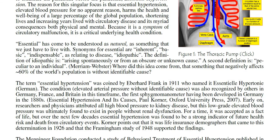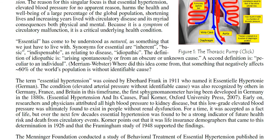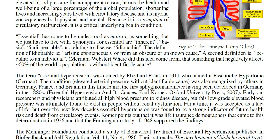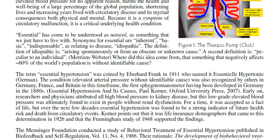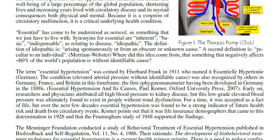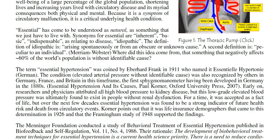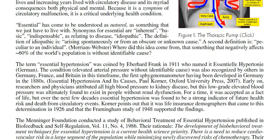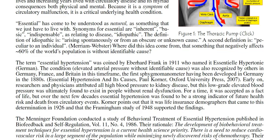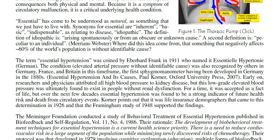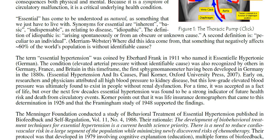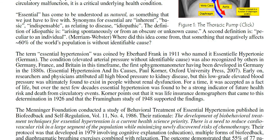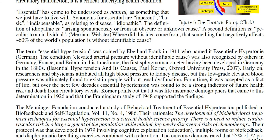Early on, researchers and physicians attributed all high blood pressure to kidney disease. But this low-grade elevated blood pressure was ultimately found to exist in people without renal dysfunction. For a time it was accepted as a fact of life, but over the next few decades, Essential Hypertension was found to be a strong indicator of future health risk and death from circulatory events. Korner points out that it was life insurance demographers that came to this determination in 1926, and that the Framingham study of 1948 supported the findings.